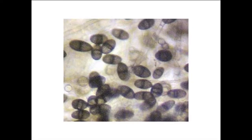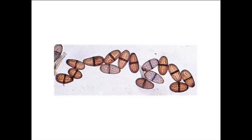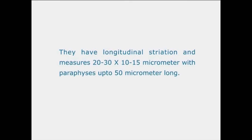The pathogen is a pycnidial fungus. Pycnidial spores are hyaline and thin-walled, becoming thick-walled and dark brown with one septum. They have longitudinal striations and measure 20–30 × 10–15 micrometers, with paraphyses up to 50 micrometers long.